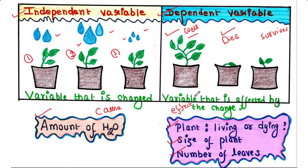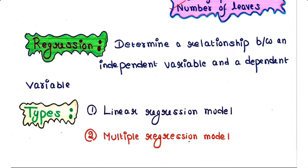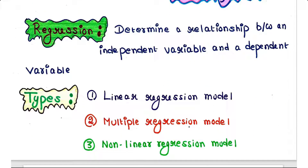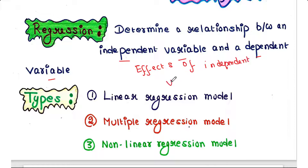The dependent variable is the effect — its value depends on changes in the independent variable. Now let's define regression. Regression is used to determine a relationship between an independent variable and a dependent variable. Hence regression helps us to predict the effects of the independent variable on the dependent variable.